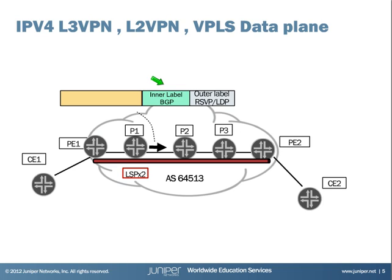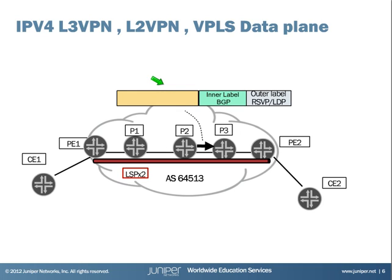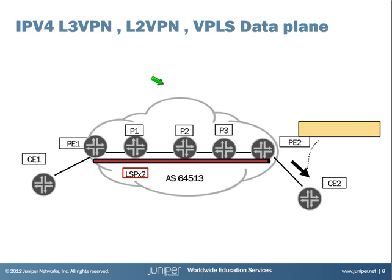For the P routers, we simply swap the outer label regardless of the content or type of the packet, whether it is related to Layer 2, or Layer 3 VPN, or within the VPLS.